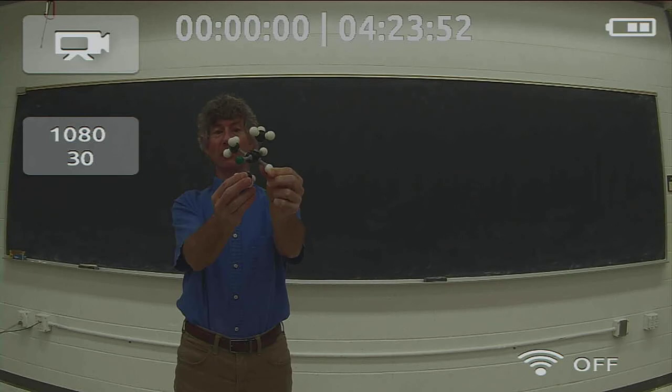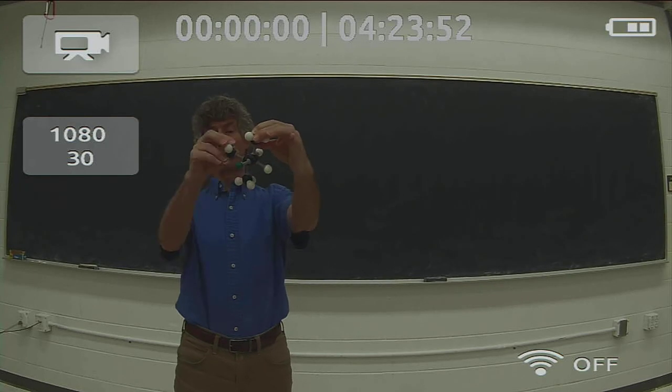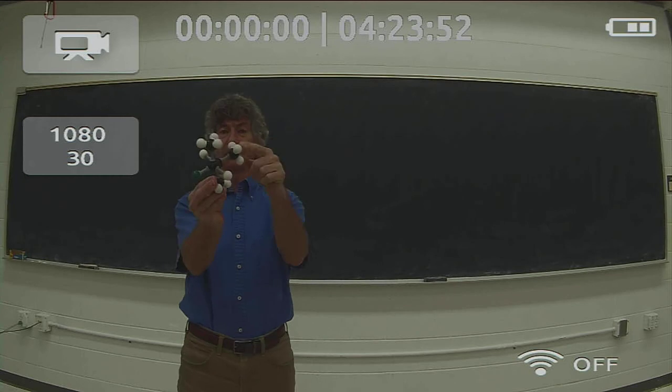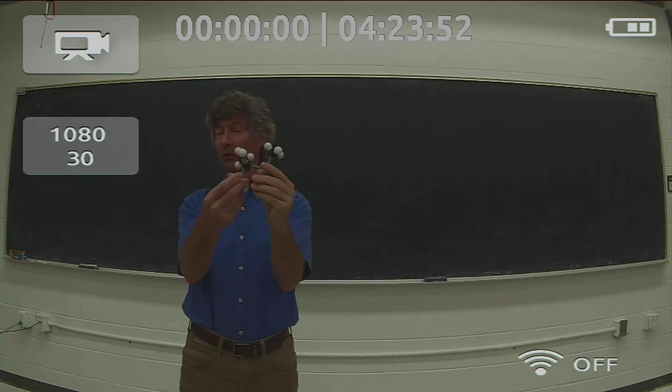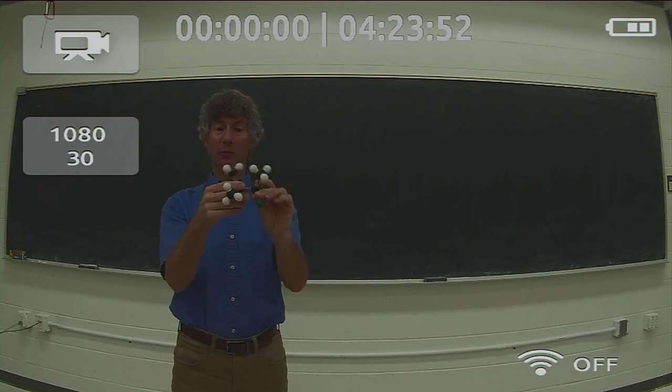If I put this methyl group anti to the methyl group there, then these two are gauche. And if I put this methyl group anti, then these two are gauche. So there's going to be no strain-free conformer for 2-methylbutane.